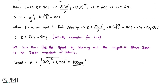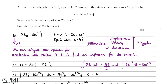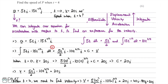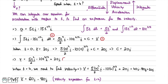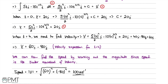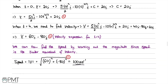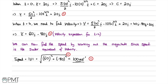There are six marks available. Mark 1: knowing to integrate acceleration with respect to time. Mark 2: correctly integrating and adding c to give the velocity expression. Mark 3: finding c = 20i using the initial condition. Mark 4: finding the velocity vector at t = 4 is 60i - 80j. Mark 5: attempting to find the magnitude. Mark 6: the correct final answer of 100 metres per second.